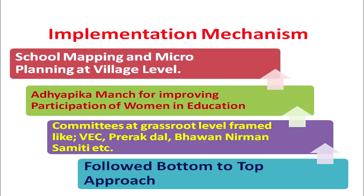The implementation mechanism of Lok Jumbesh project followed a bottom-to-top approach. This means that people at the bottom level — the community and teachers working at the grass root level — were involved in the decision-making process. The process was participatory in nature. People from the village community were involved in primary education affairs, and the feedback received from the grass root level was incorporated in plans and schemes formulated at the higher level.